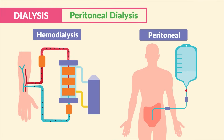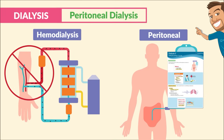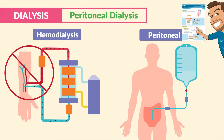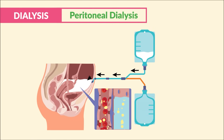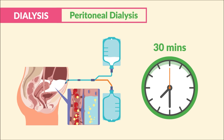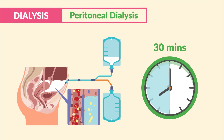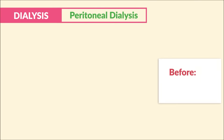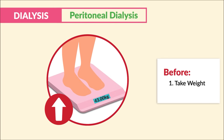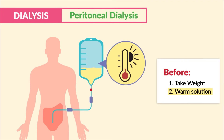Switching gears to peritoneal dialysis — this is very different than hemodialysis in that there's no shunt in the arm. Instead, the peritoneal cavity is filled up with hypertonic solution to pull out solutes. We allow the fluid to sit in the body for about 30 minutes — this is called the dwell phase — and then we empty the drain to gravity. Before, just like any dialysis, we take weight and we warm the solution.